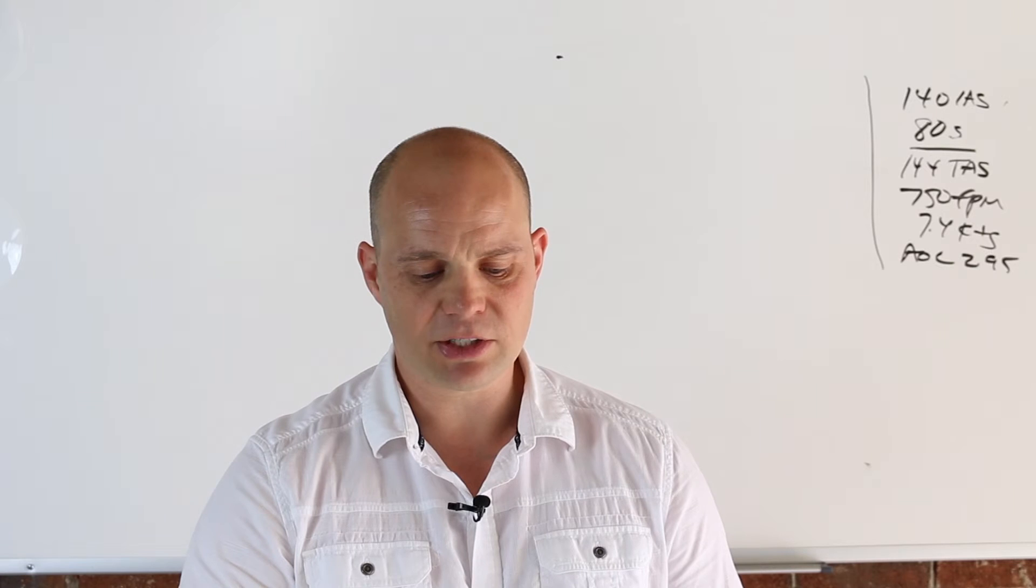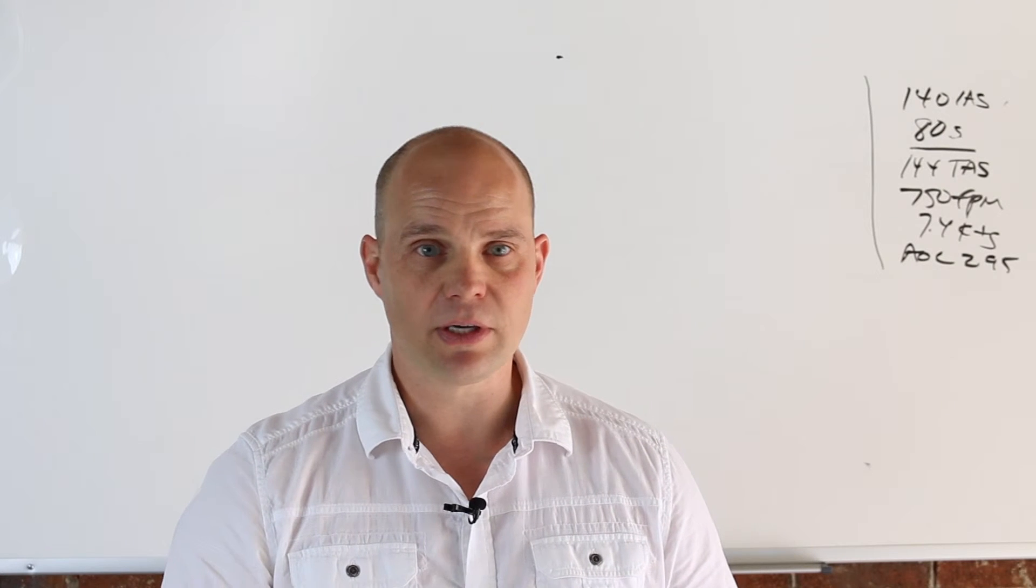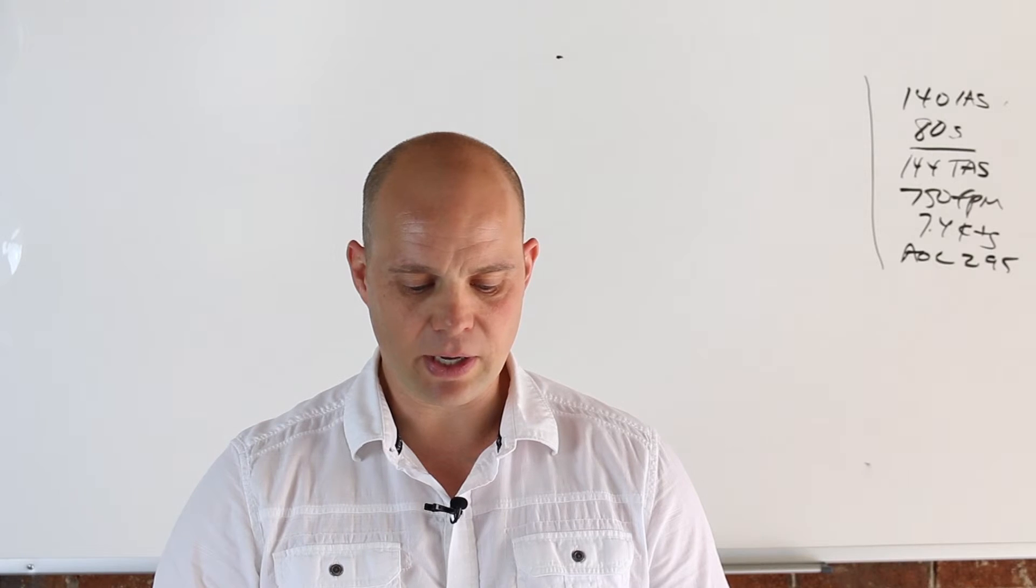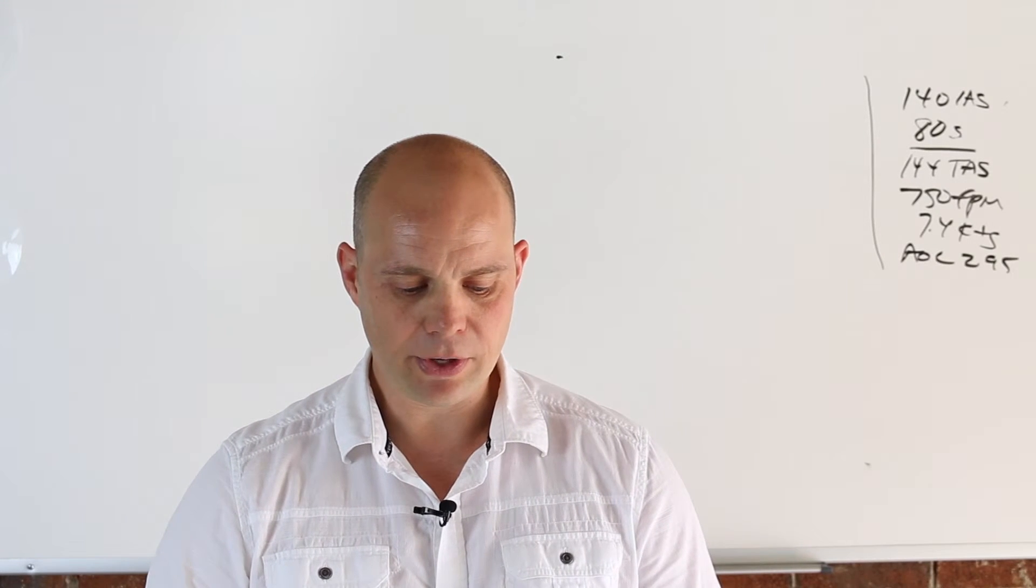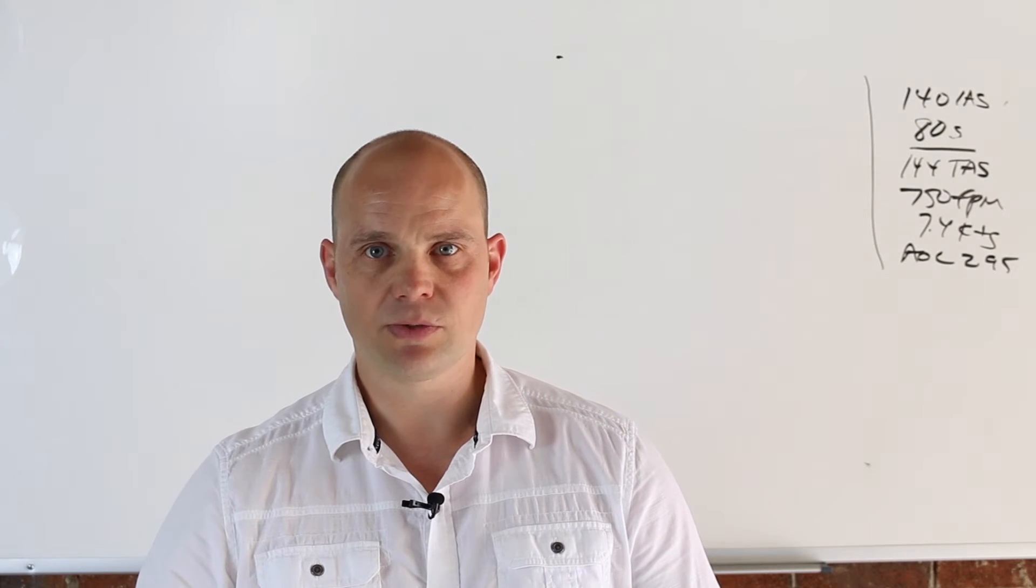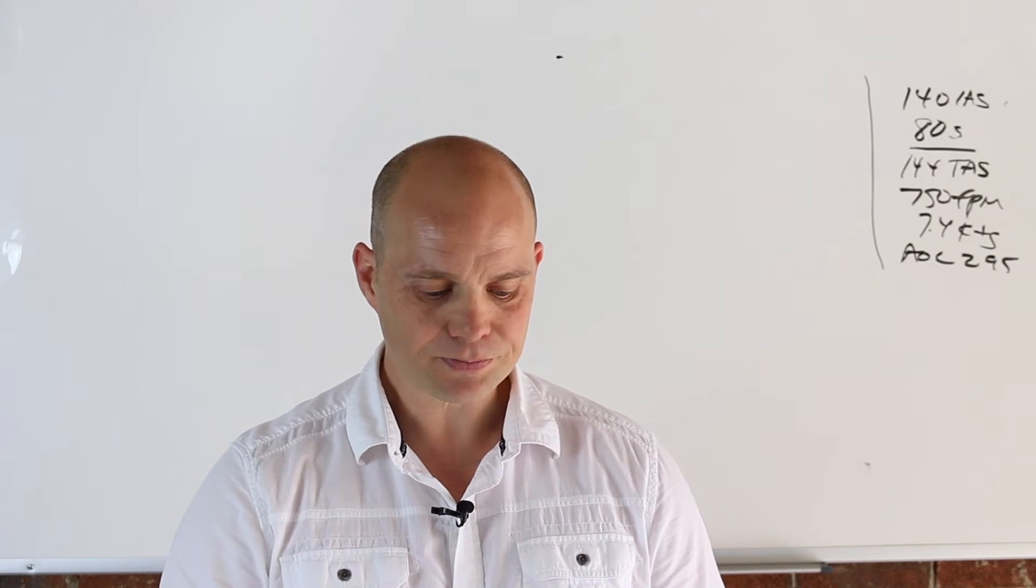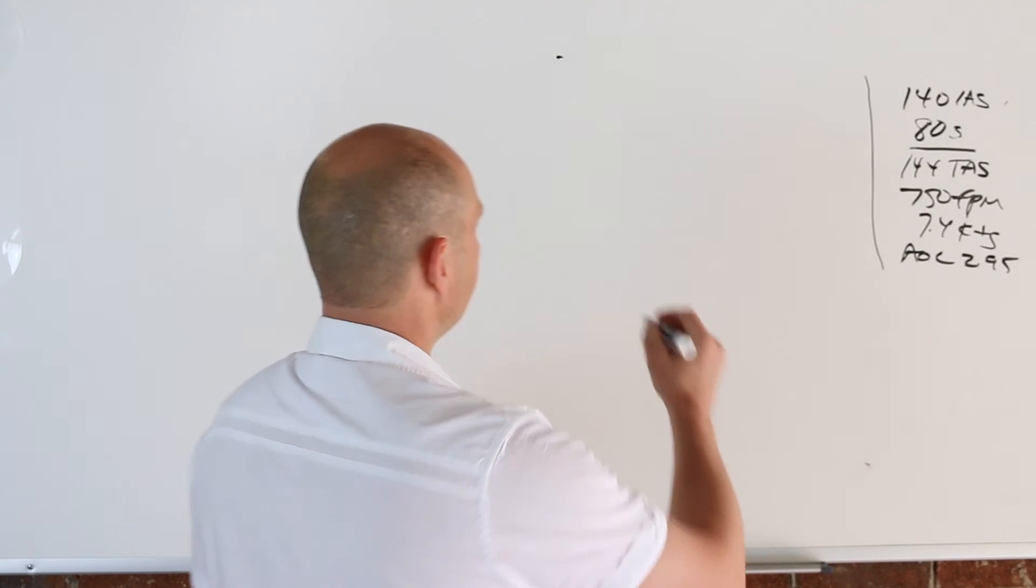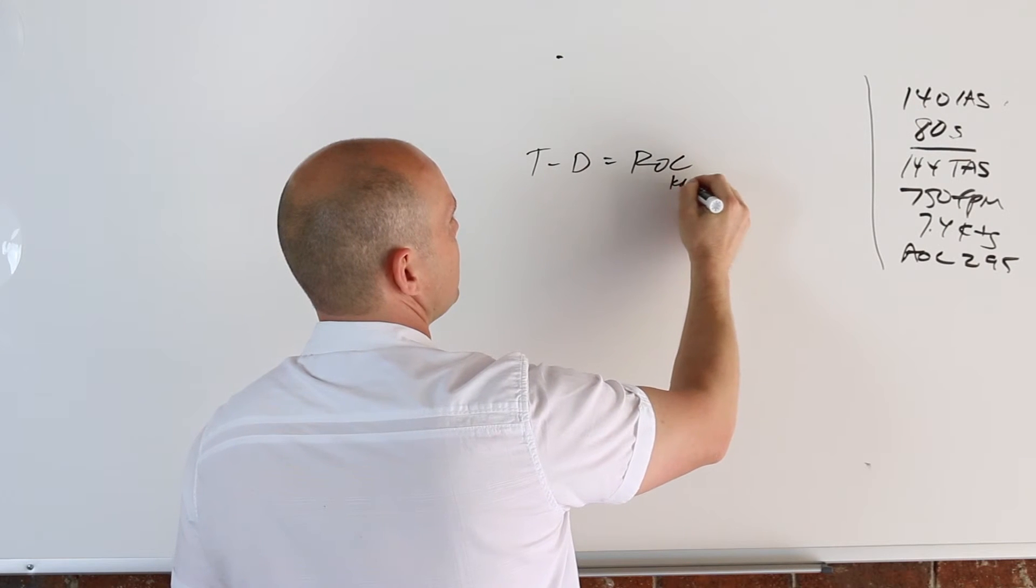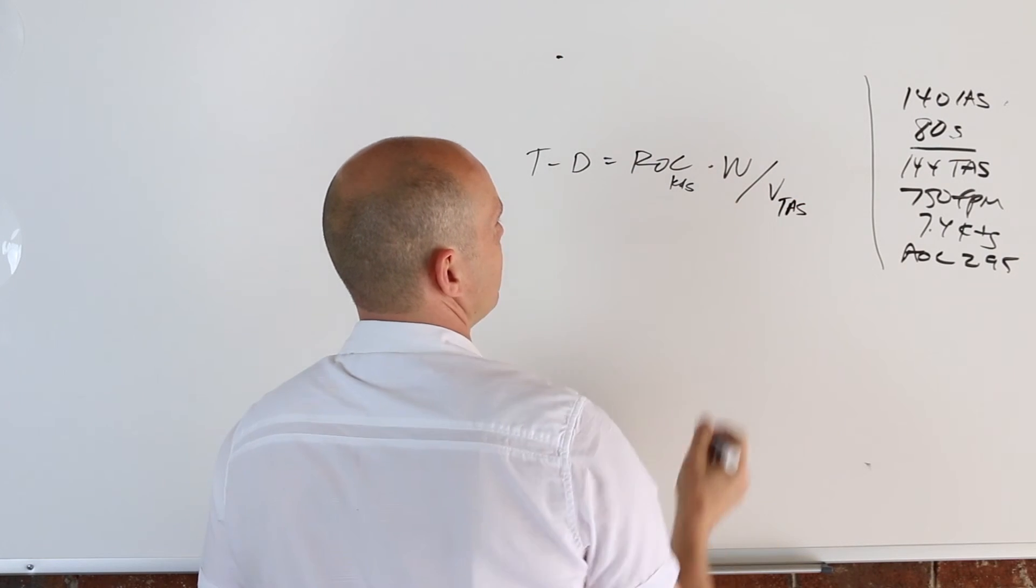And then for the last one, this is excess thrust at Vy and Vx. And excess thrust, we just talked about how you can express it in feet per minute or feet per second. You can also do it in pounds if you know some other data, which we have. So it's thrust minus drag, that's really what excess thrust is. Thrust minus drag, what you have left over is your excess thrust. So that equals rate of climb in knots times your weight divided by your velocity. We'll call this true airspeed.